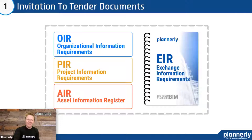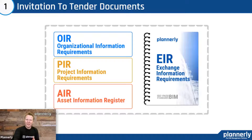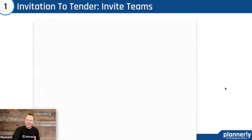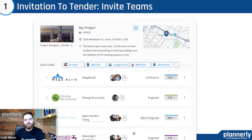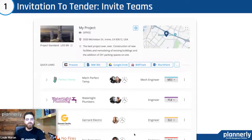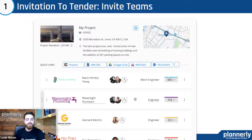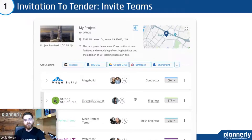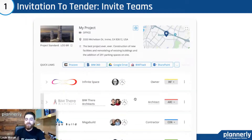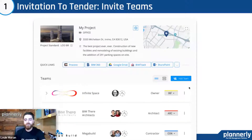For the invitation to tender, you put together the organizational, project, and asset information requirements into an exchange information requirement, which becomes the tender documentation. Within the platform, you can set up teams to assign responsibility for certain sections and invite team members with specific permission levels so they can see sections that are ready for them to review.